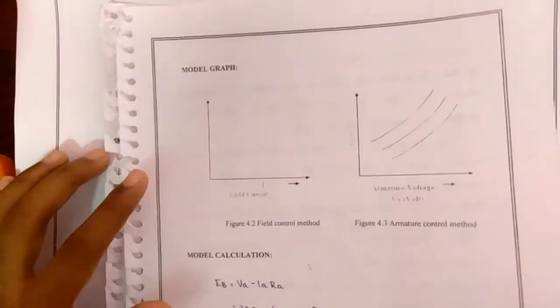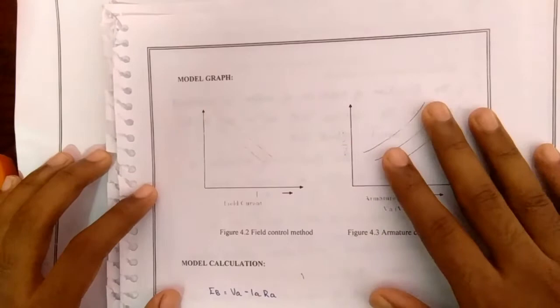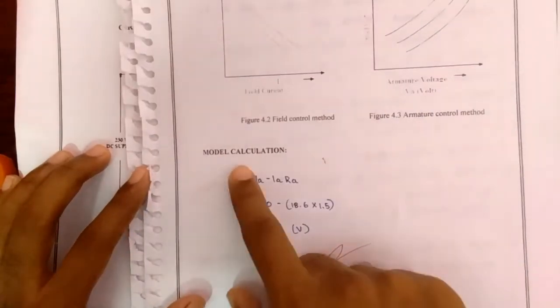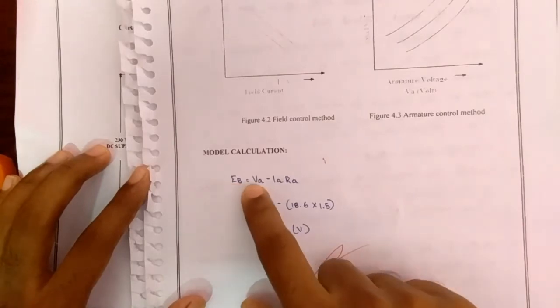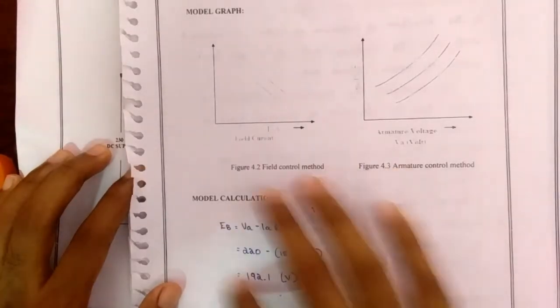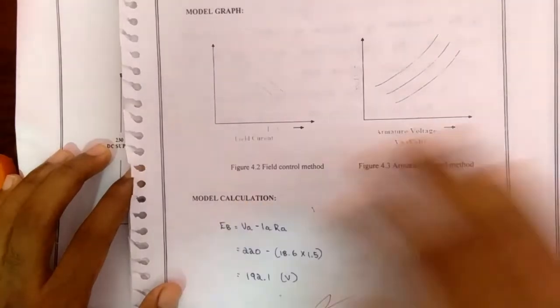After noting down all the values we should plot the graph. Before that I will show the model calculation for this. So the formula will be Eb is equal to Va minus Ia Ra. With this formula we can find the value of Eb.